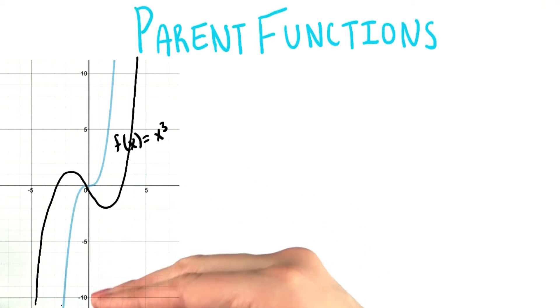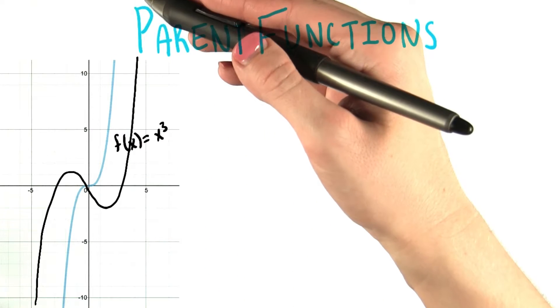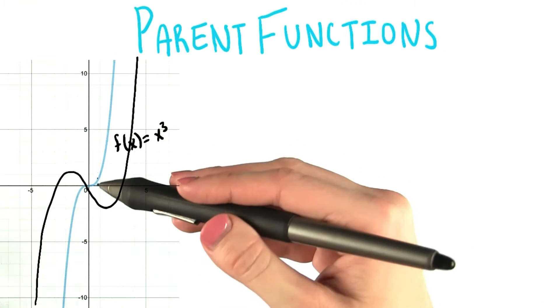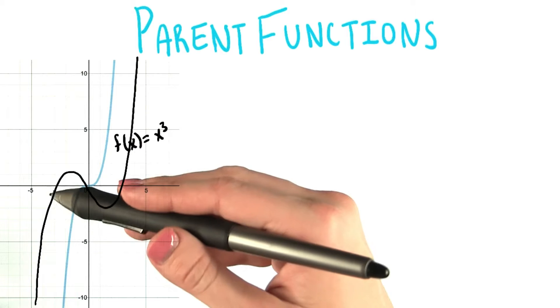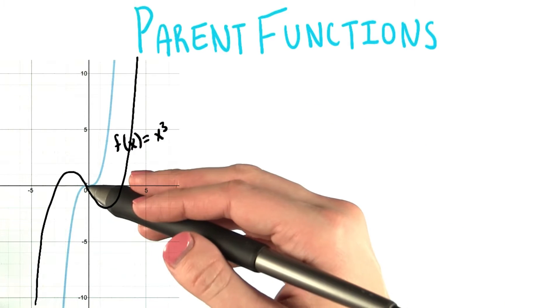One end of the graph is going down to negative infinity, and the other end of the graph is going up to positive infinity. In the middle, there's sort of a gray area of, in this case, going down and then going up again, and in this case, sort of leveling out for a bit.